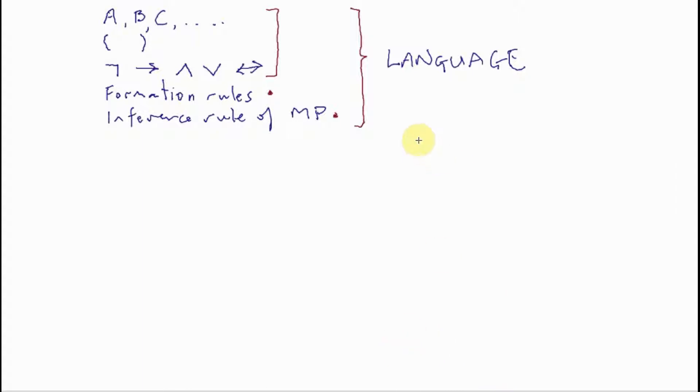Now, what does this language enable us to do? Well, as we described, it enables us to write lists of WFFs. And WFFs, remember, are strings of these symbols concatenated in accordance with the formation rules, giving us meaningful expressions. WFFs are meaningful expressions in our language. And our language enables us to write lists.